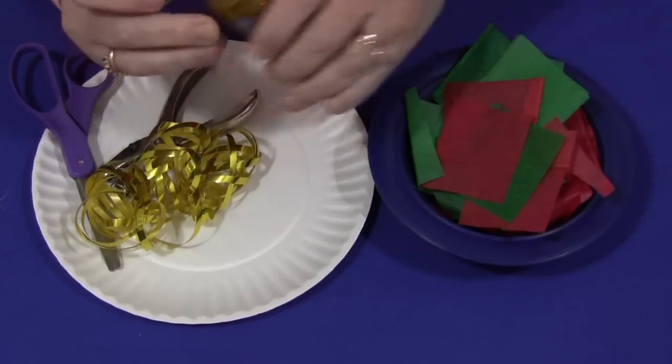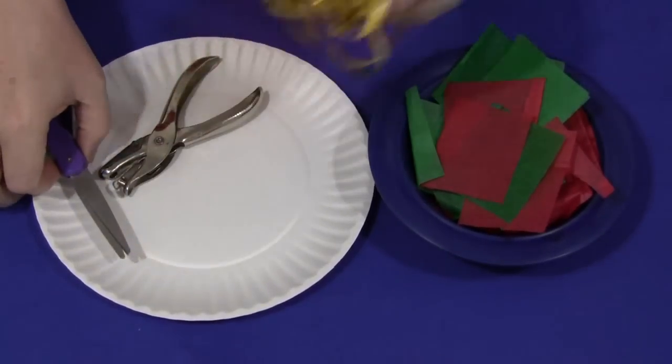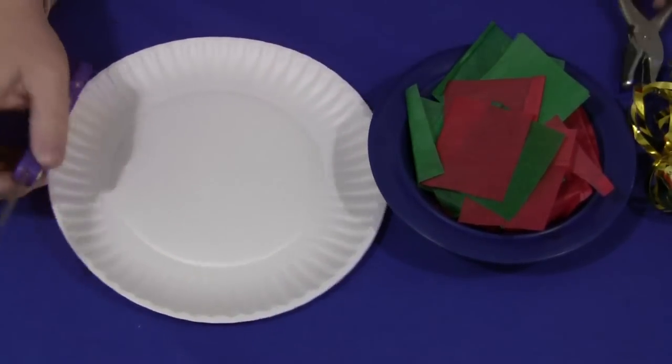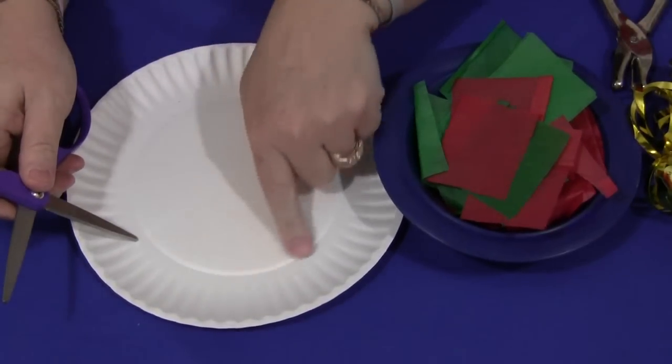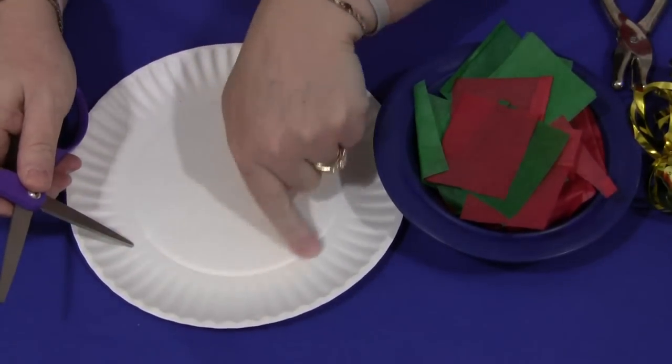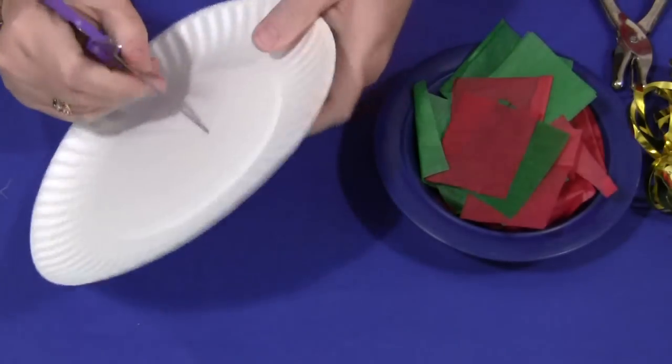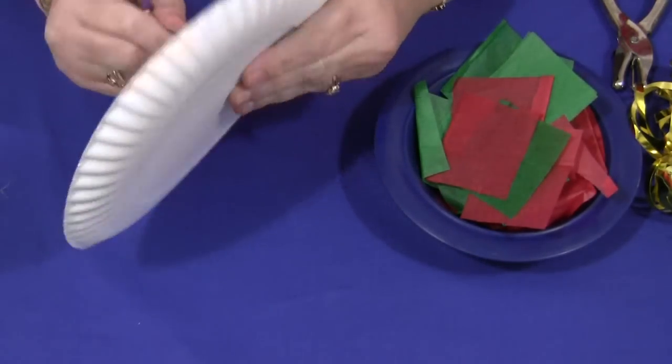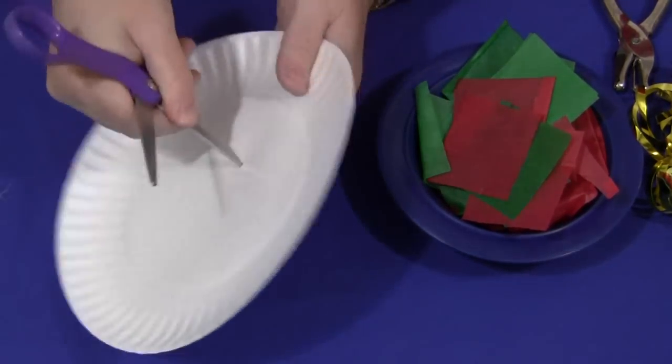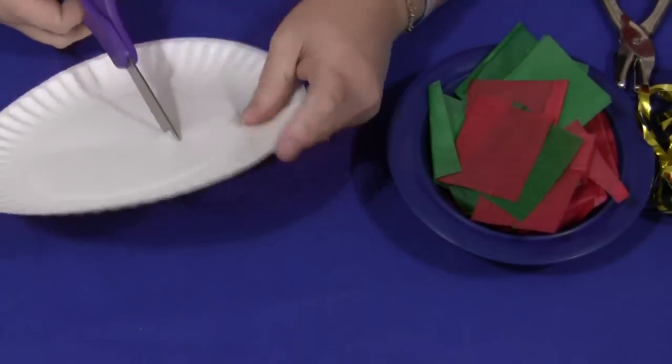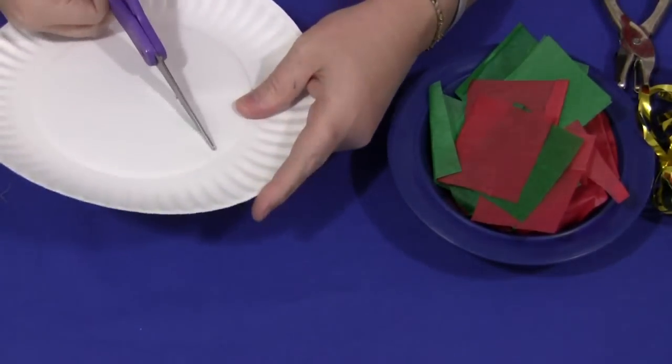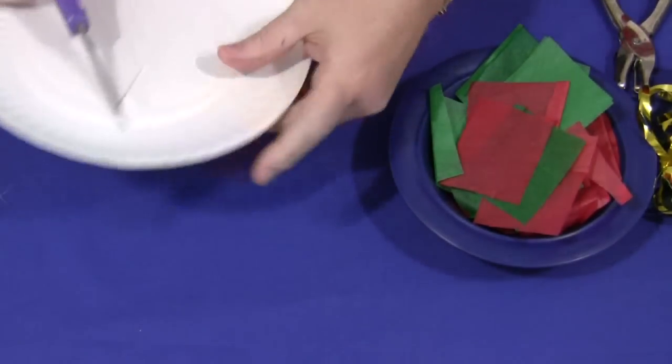Start with your paper plate and cut out the center. You can see there's already a circle marked, so that's the part to cut out. Be careful when punching that hole through. I'm taking my scissors and working them back and forth to get started, then work your way over to the edge and start cutting out the circle in the middle.